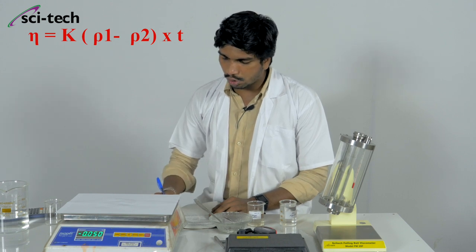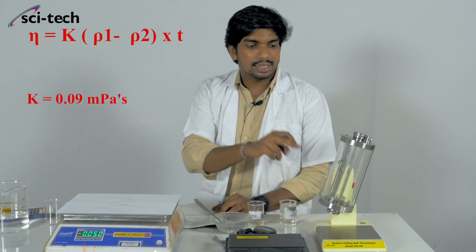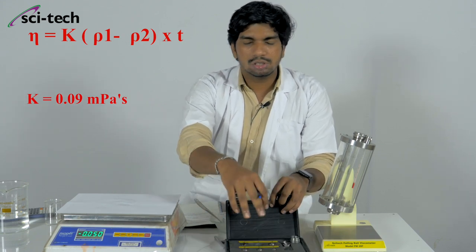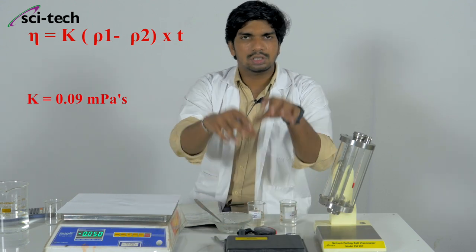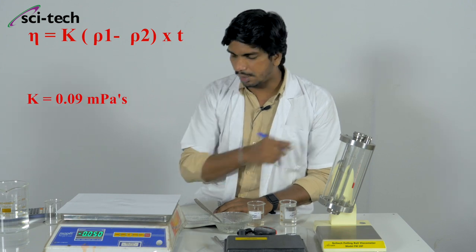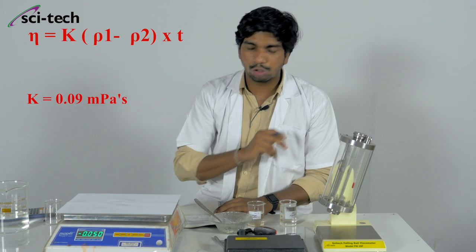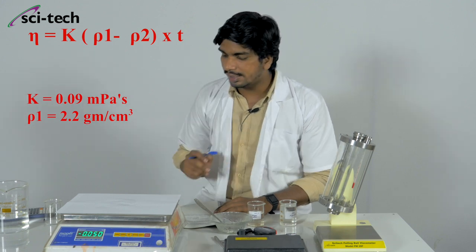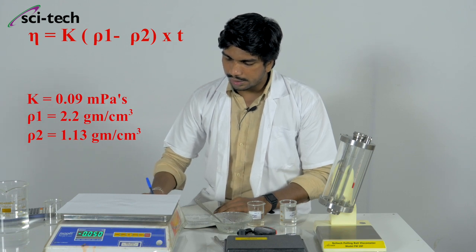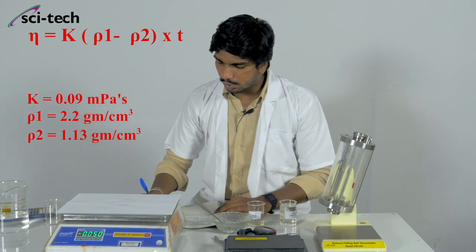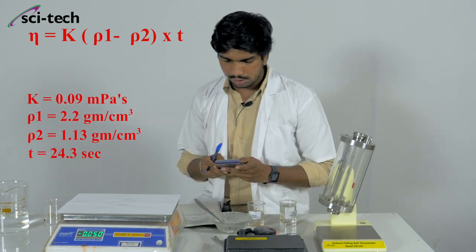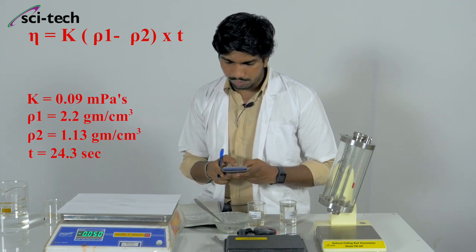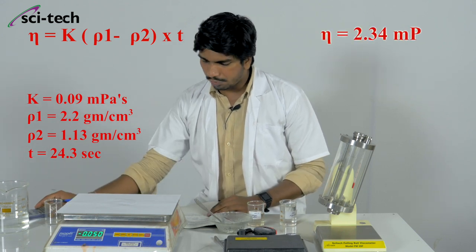For the 40% sugar solution: density of the ball is 2.2 g/cm³, density of the solution is 1.13 g/cm³, ball constant K for ball number 2 is 0.09 mPa·s·cm³/g, and the mean falling time is 24.3 seconds at a measuring temperature of 30°C. All 6 ball constants and densities are given in the manual. Calculating: 0.09 × (2.2 − 1.13) × 24.3 = approximately 2.34 mPa·s dynamic viscosity.